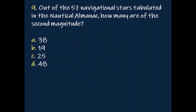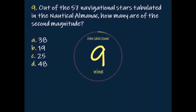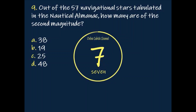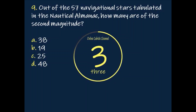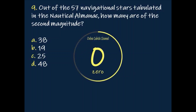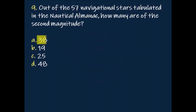Question: Out of the 57 navigational stars tabulated in the nautical almanac, how many are of the second magnitude? Answer: 38.